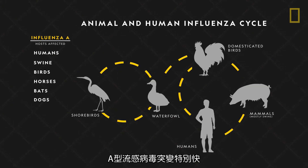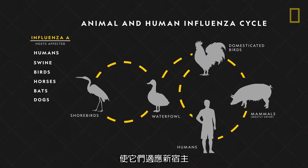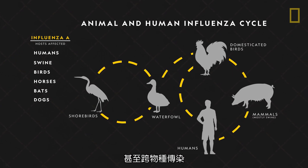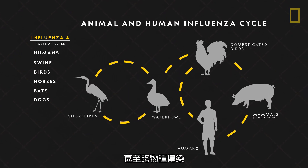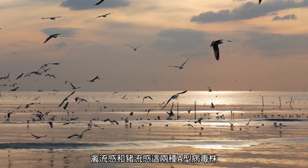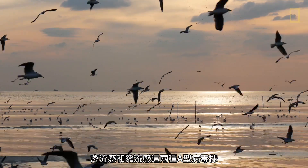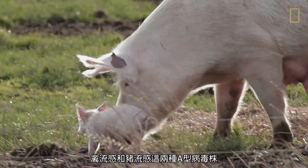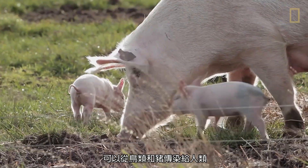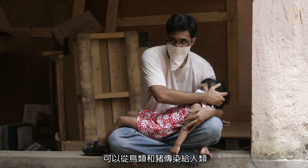Influenza A viruses mutate more rapidly, allowing them to adapt to new hosts and even cross species. Avian flu and swine flu, for instance, are two strains of type A viruses that, through mutations, can be transmitted from birds and pigs to humans.